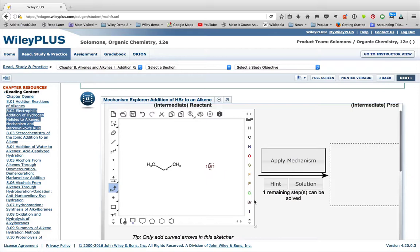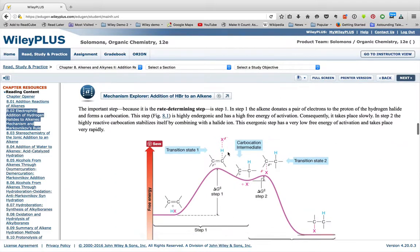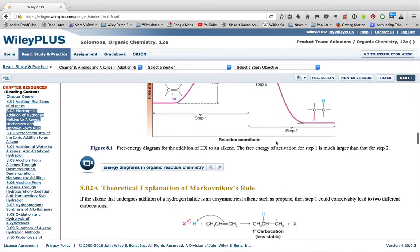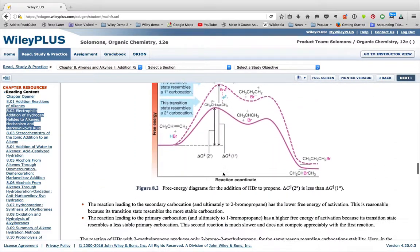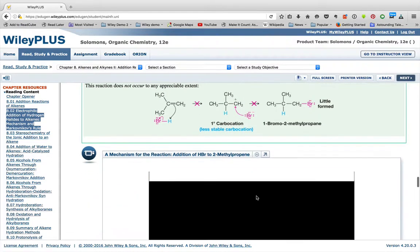We can draw in our arrows. We can attempt to do the mechanism. We'll be told if it's correct or incorrect by feedback right underneath. So all throughout the textbook, you're going to have these mechanisms. Here's an energy diagram and then a video on using the energy diagram.